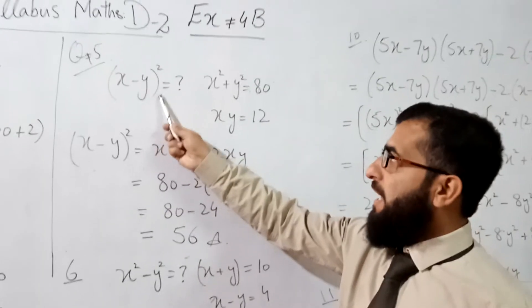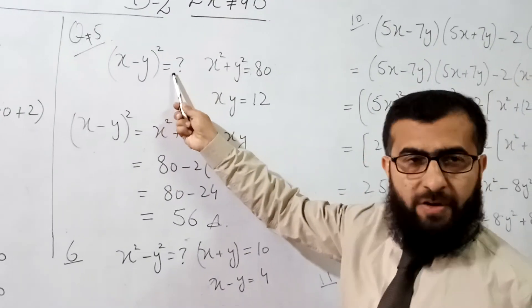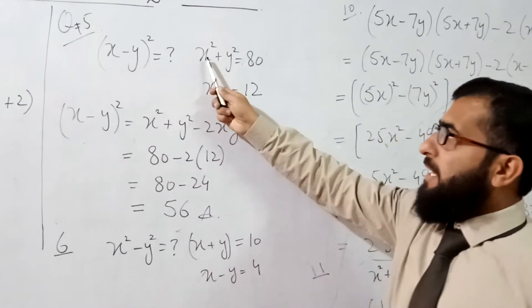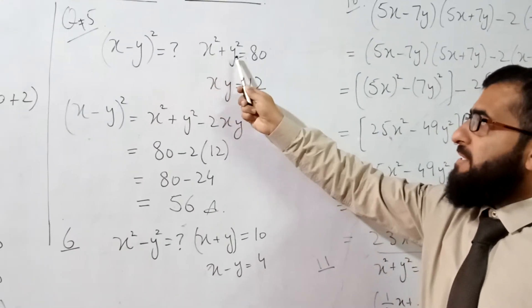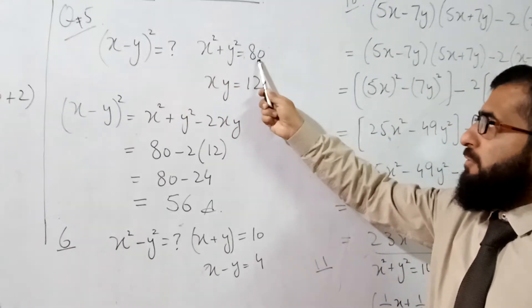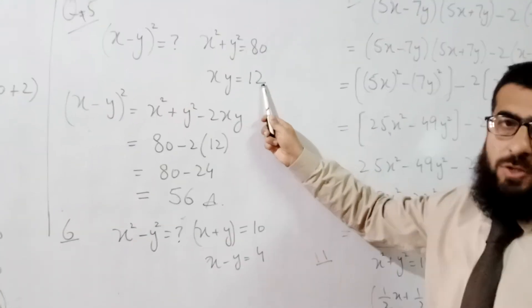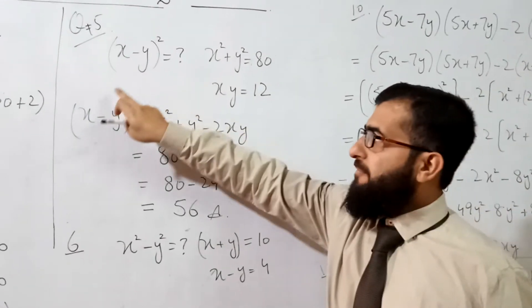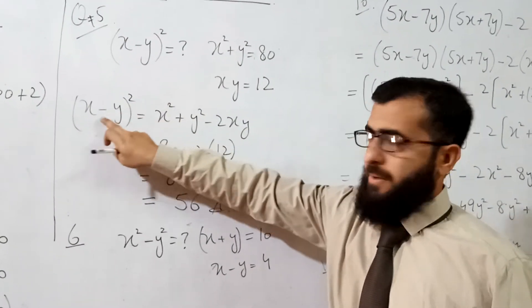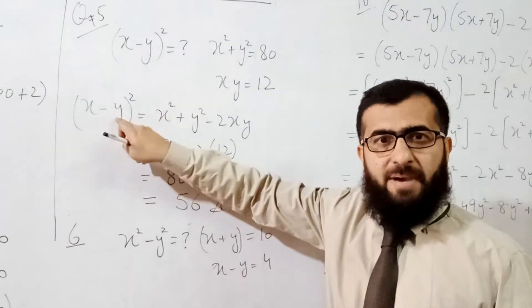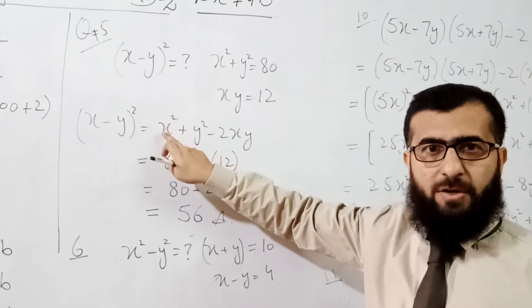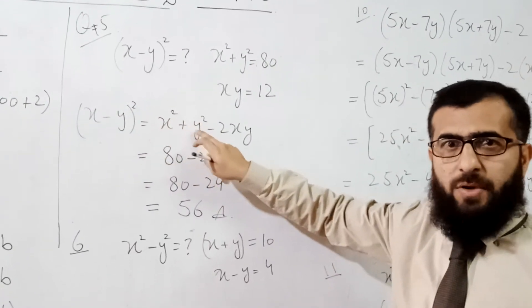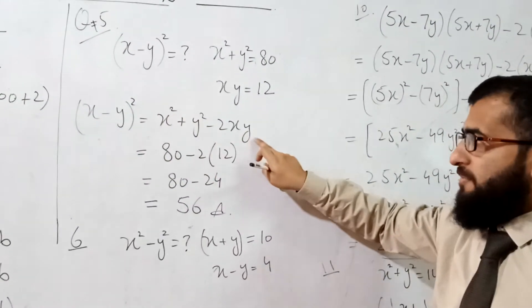Question 5: Find the value of (x − y)². The given values are x² + y² = 80 and xy = 12. Open the formula: (x − y)² = x² + y² − 2xy.